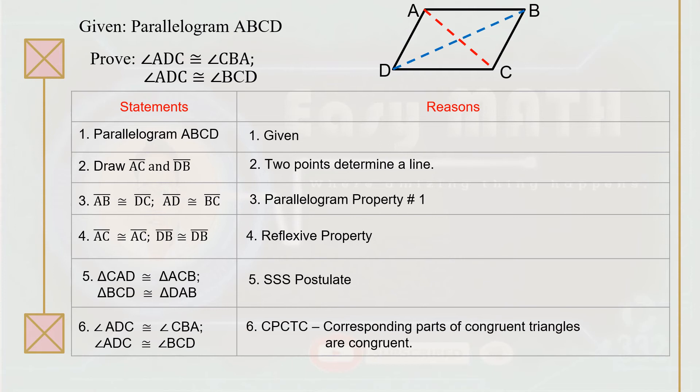We arrive at the final statement: angle ADC is congruent to angle CBA, and angle ADC is congruent to angle BCD. This is because of CPCTC — the corresponding parts of congruent triangles are congruent — which implies that the opposite angles of a parallelogram are congruent.